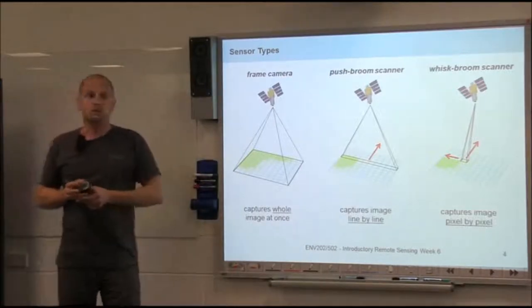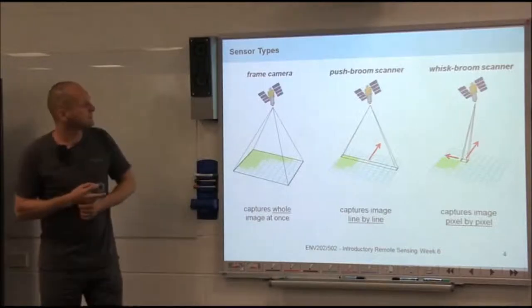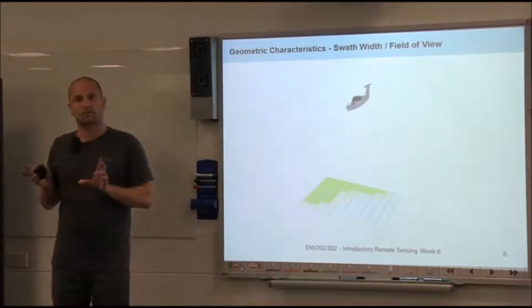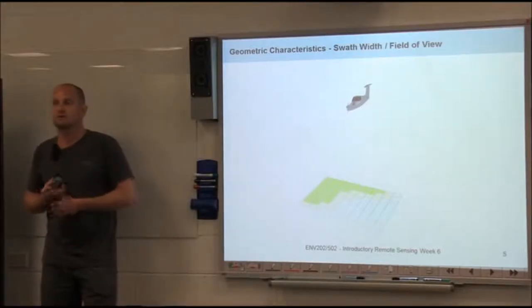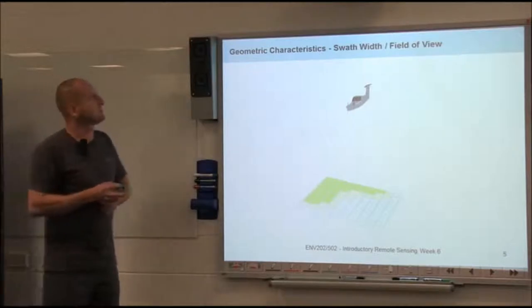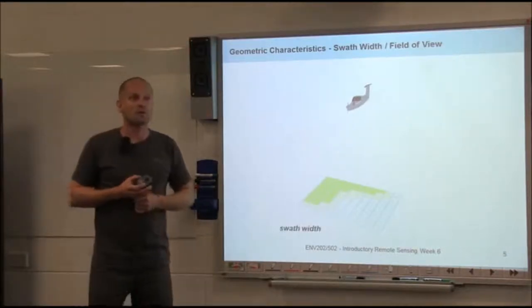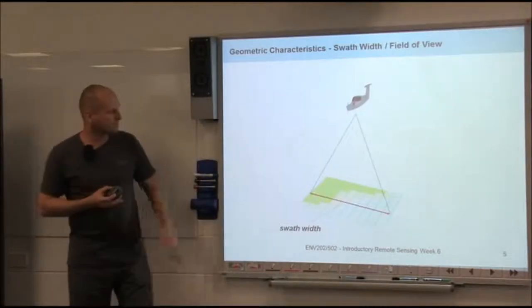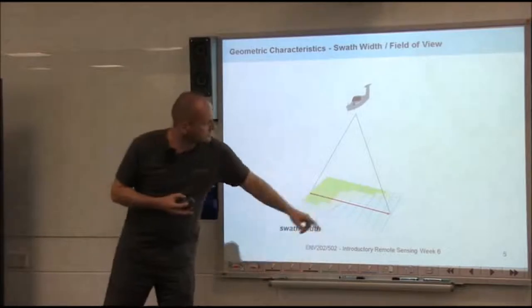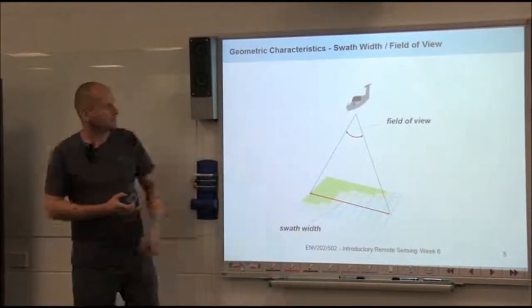Okay. Any more questions regarding these sensor types? No? Alright. Then a few terms that we regularly use in remote sensing that characterize the sensor. First one is swath width. Anyone know what that is? It's basically the image width. So I'll just try to illustrate that.